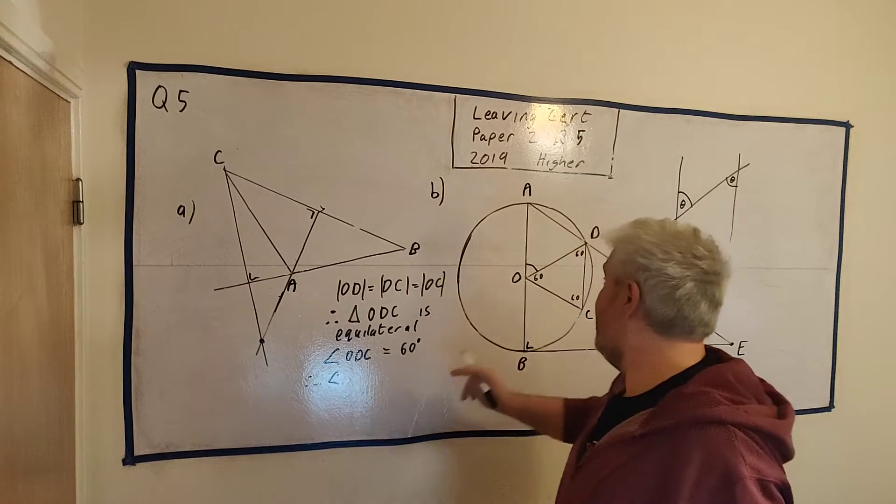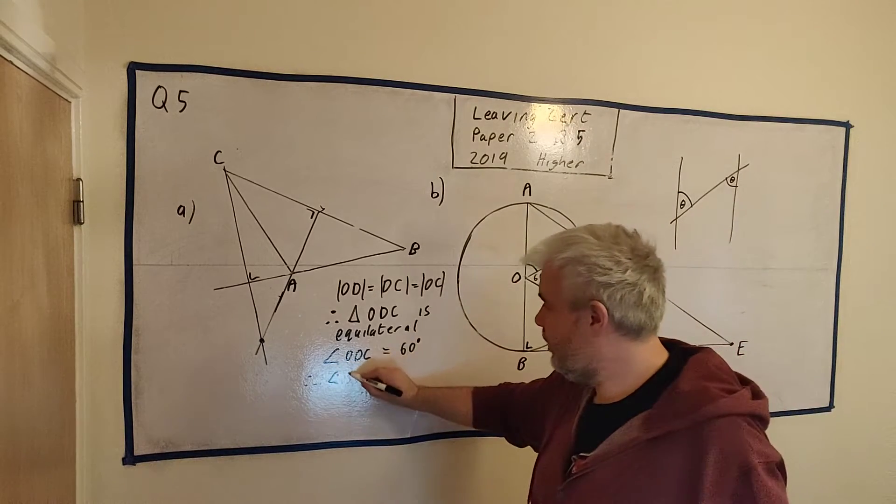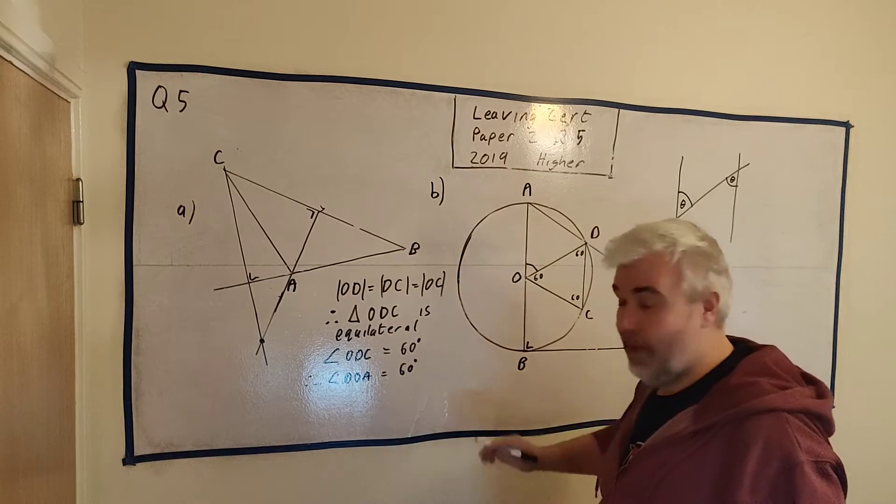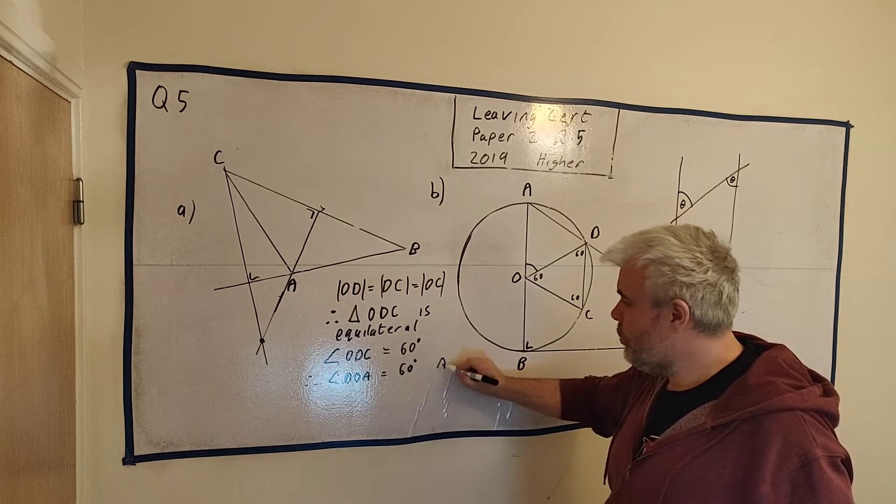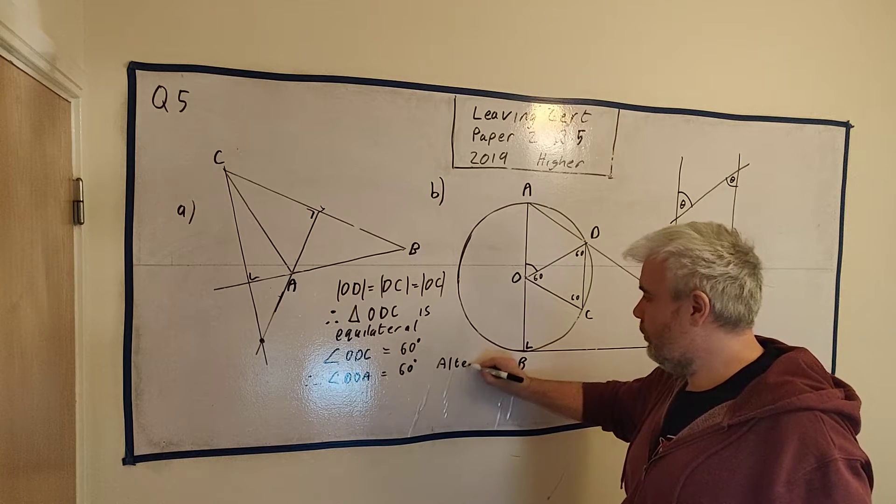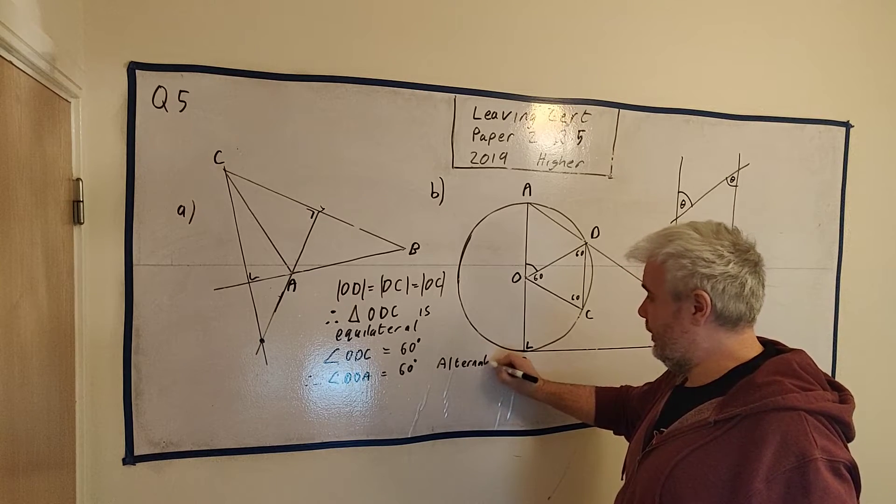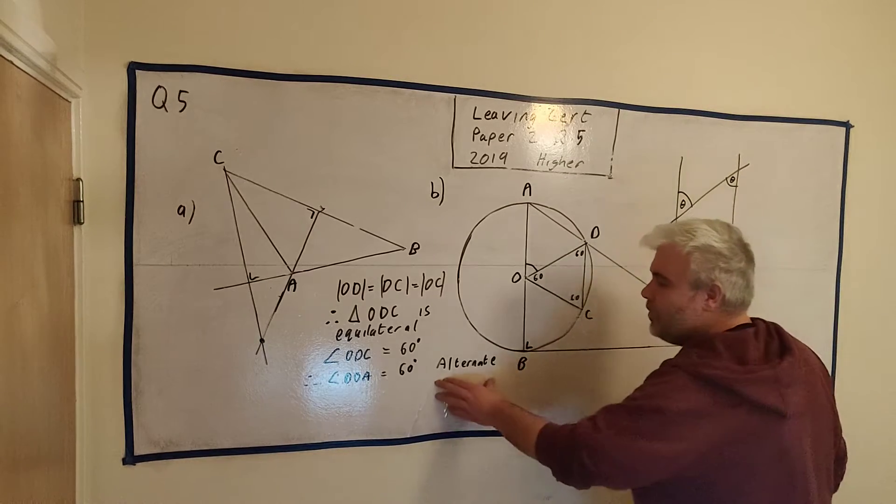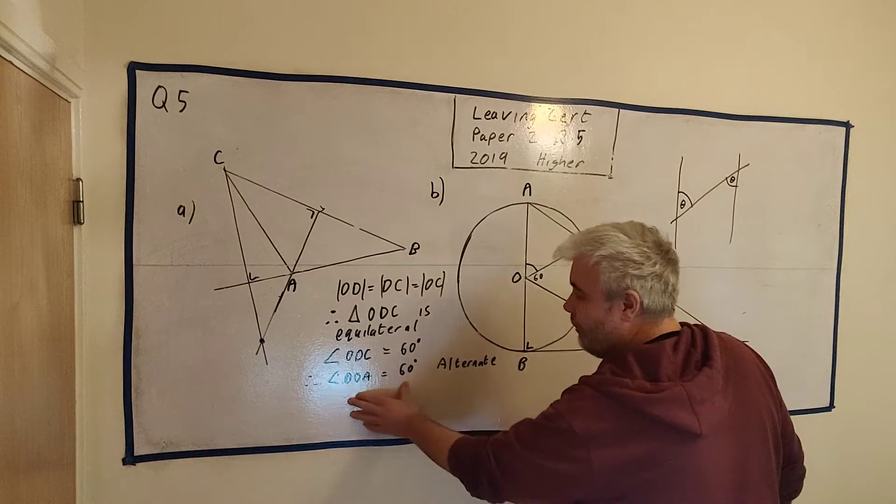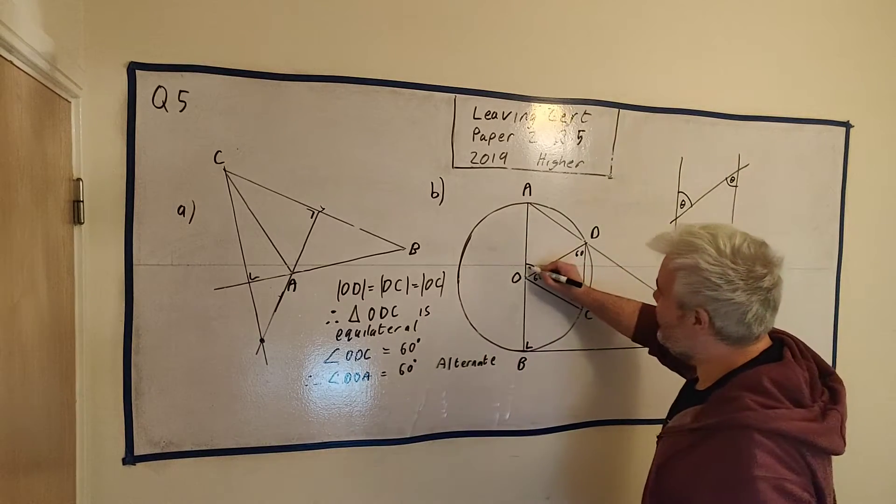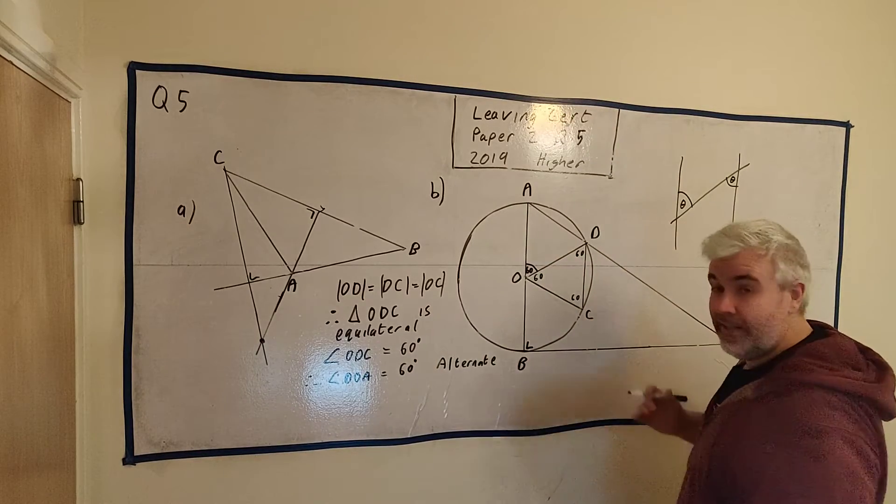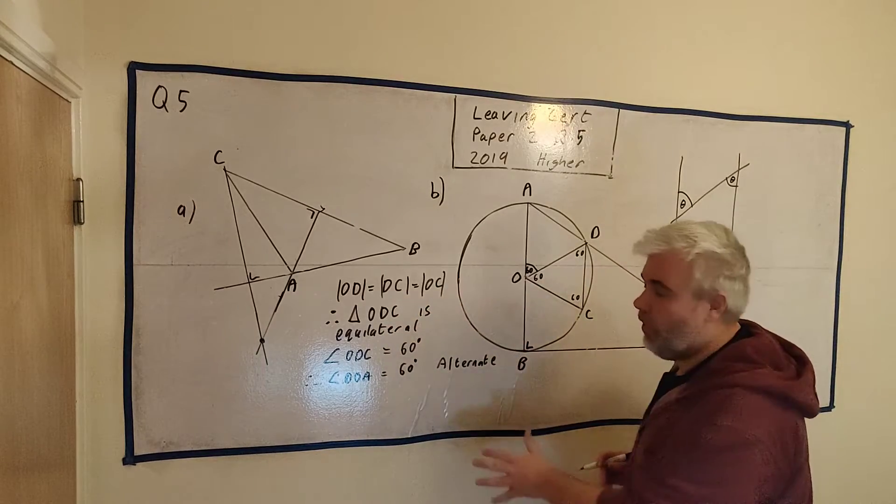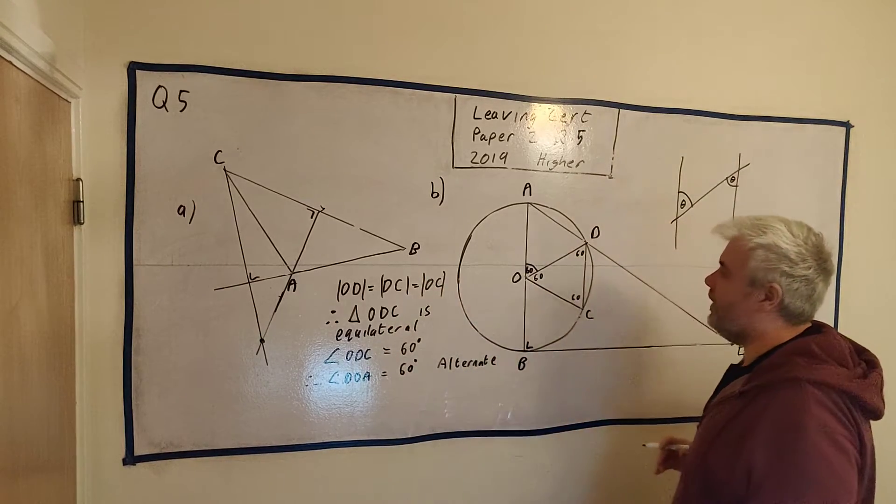This angle and this angle is alternate angles. We'll write, therefore, the angle DOA equals 60 degrees. And we might write here why. We just might write ALT or ALTERNATE. I'm not sure how to spell that one. This is math. We don't need to know how to spell correctly. But the ALTERNATE is an angle. That means this, in fact, is now 60 degrees. And again, we can be writing all this in English if we want. We do not need to write off the terms like this.